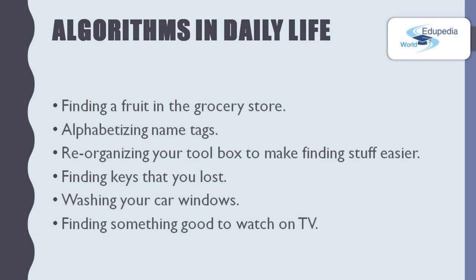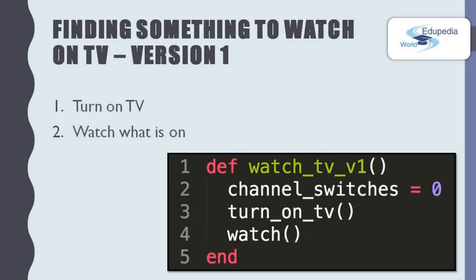Now, here are a few problems that you face in your daily life that needed solutions as algorithms. Finding a food in the grocery store. Alphabetizing name tags. Reorganizing your toolbox to make finding stuff easier. Finding keys that you lost. Washing your car windows. Finding something good to watch on TV. Now, let's take this final problem. Finding something good to watch on TV.